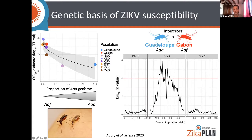The other approach was to perform an artificial cross between mosquitoes from Guadeloupe, representing the Aedes aegypti aegypti subspecies, and mosquitoes from Gabon, representing the Aedes aegypti formosus subspecies. This cross allowed us to perform genetic mapping and locate genetic factors on the second chromosome of the mosquito responsible for the difference in Zika virus susceptibility between the two subspecies.